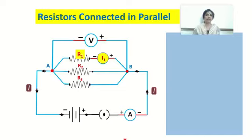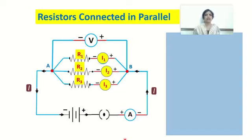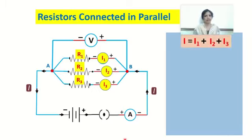In the same manner, we connect an ammeter in series with resistor R2 and measure the current through R2, calling it I2. A third ammeter is connected in series with resistor R3, and the current through that is I3. So we have currents I1, I2, and I3 flowing through R1, R2, and R3 respectively. You will observe that the total current I is equal to I1 plus I2 plus I3.